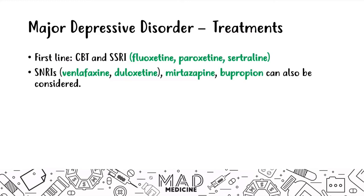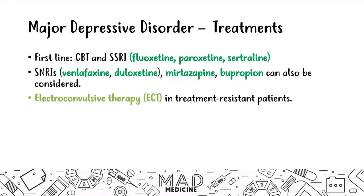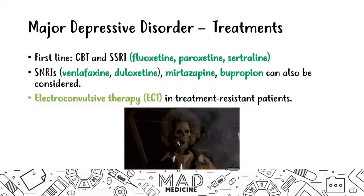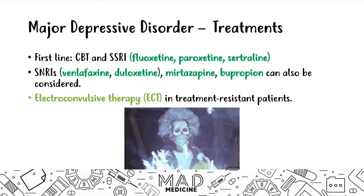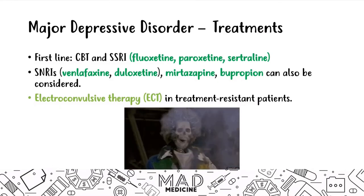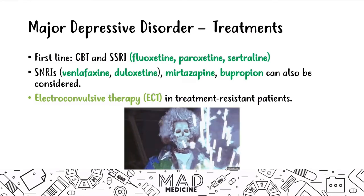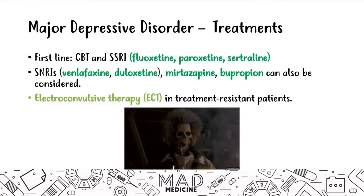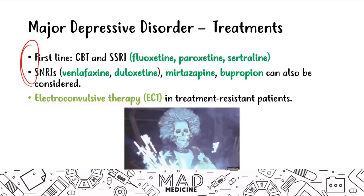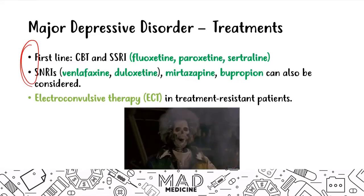SNRIs, mirtazapine, and bupropion are second-line drugs typically used for refractory or treatment-resistant depression. If all else fails, electroconvulsive therapy (ECT) can be used in treatment-resistant patients. The majority of MDD conditions can be treated with the medications already discussed, so memorize the drug names — this slide is very important for the exam.